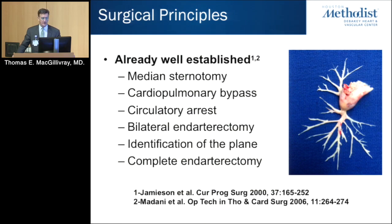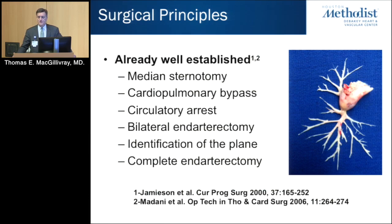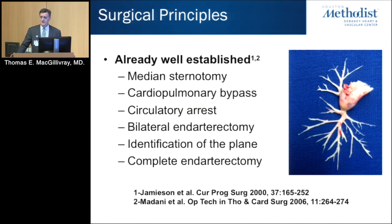Nobody is doing these through minimal access surgery. It's done not only on cardiopulmonary bypass, but most of the time — and probably recommended — under circulatory arrest. It's paradoxical that a disease caused by decreased blood supply to the lungs requires this, but the problem with doing these just on bypass is there's so much collateral blood flow through the bronchial arteries that you can't see unless you do circulatory arrest. Circulatory arrest means cooling the patient's temperature down and turning off the pump, so there's no blood flow to the lungs or the brain. You have to be quite expeditious as well as effective in doing the operation.